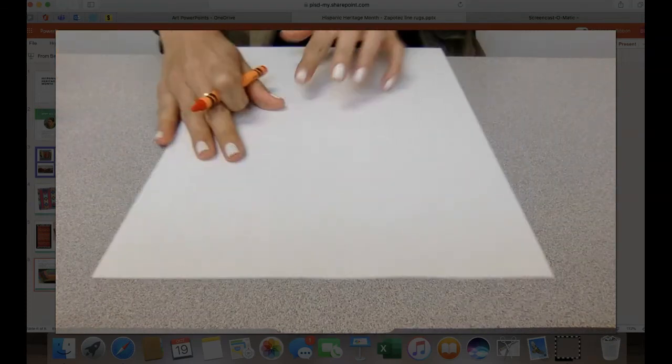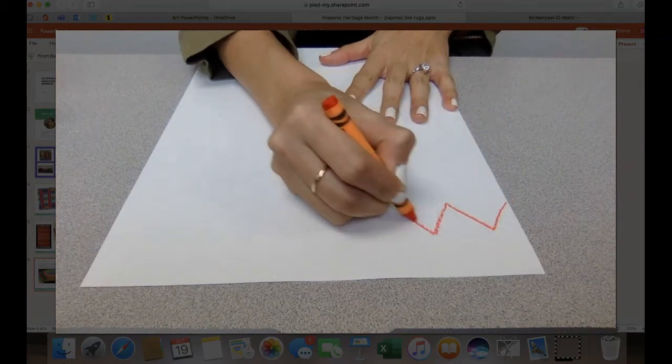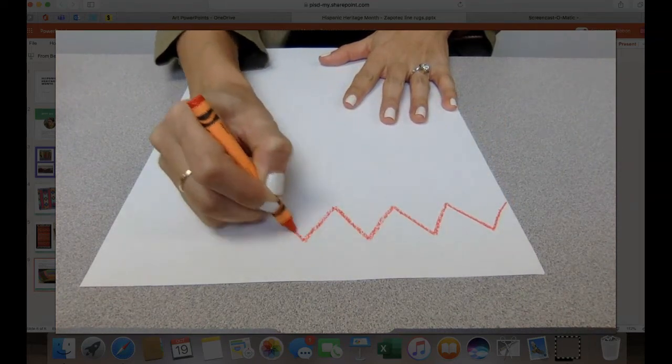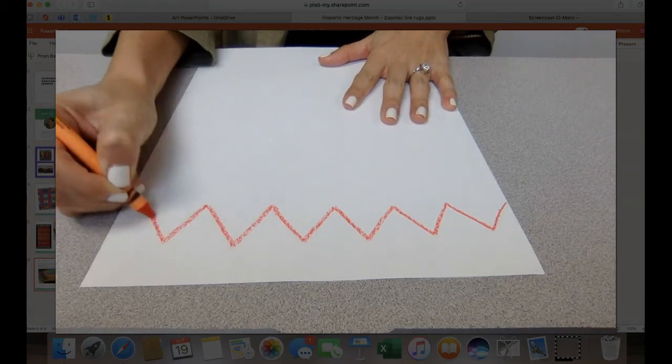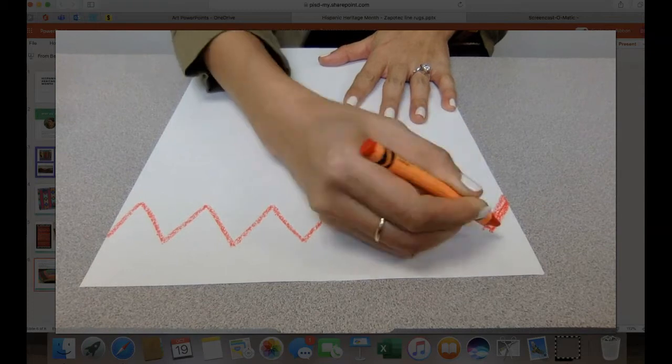So with my white paper, I'm going to use my crayons and I will start to create the designs on my rug. So here, we're going to use line and shape. My first line that I'm going to do, and you don't have to do the same ones that I'm doing, but my first line that I'm going to do is the zigzag or the mountain lines.